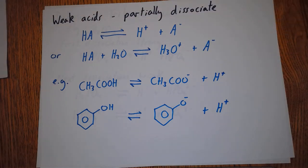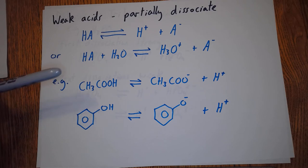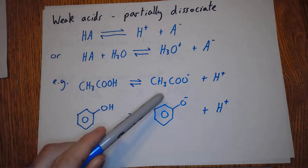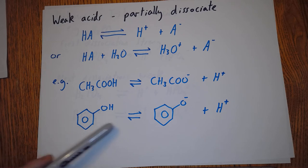Weak acids do the same reaction, but we've got the reversible side. An equilibrium is reached, and again we can have it with water or without. Here we've got an example - this is ethanoic acid, and you see it's making the ethanoate ion plus H+. Here we've got phenol, and that's a very weak acid - makes the phenoxide ion and H+.